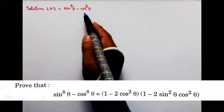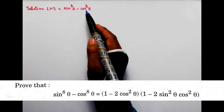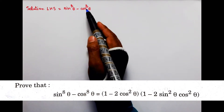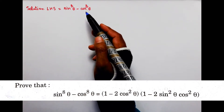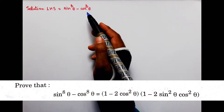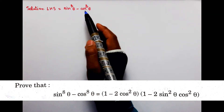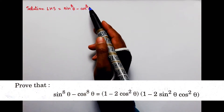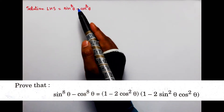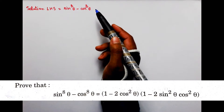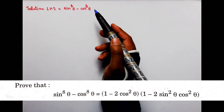Bachyo, hamare paas RHS yeh hai. LHS mein cos theta aur sin theta ke power 8 dikh rahe hain, lekin RHS mein sin theta aur cos theta ki power 2 hai. Toh power 8 ko reduce karke 2 tak leke aana hai. Iske liye 2 identities use karenge.